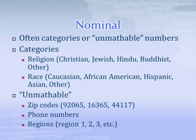Nominal variables are often categories, such as religion. These categories have no real intrinsic comparison. For example, if we were to represent each religion with a number, we would not say that those with higher numbers are more religious — that just doesn't make any sense. Same with race: a Hispanic individual has no more or less race than an Asian. Nominal variables also include unmathable numbers such as zip codes, phone numbers, and regions. We would never say that someone with zip code 92065 has greater zip code value than someone with zip code 44117 — it's not meaningful, even though numerically 44117 is less than 92065.